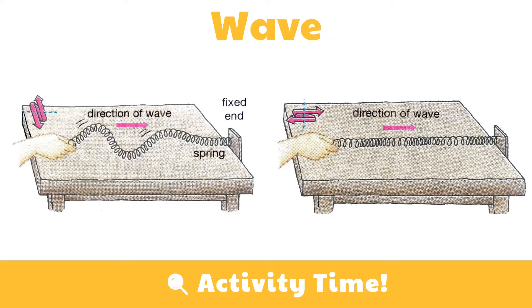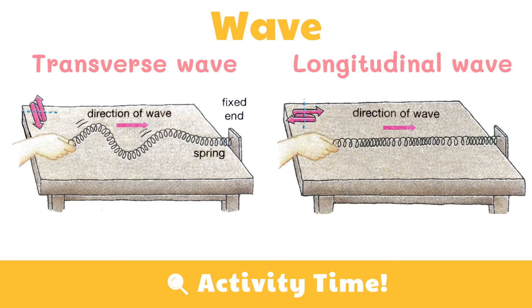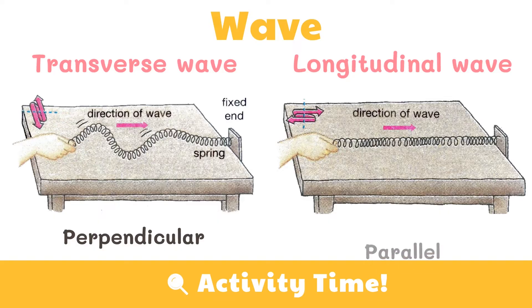The first activity you did was replicating how a transverse wave looks like, and in the second activity, you replicated how a longitudinal wave looks like. The difference is in the motion of particles with respect to the direction of travel of the wave. In a transverse wave, the movement of particles is perpendicular to the direction of wave travel. On the other hand, in a longitudinal wave, travel is parallel to the movement of particles.